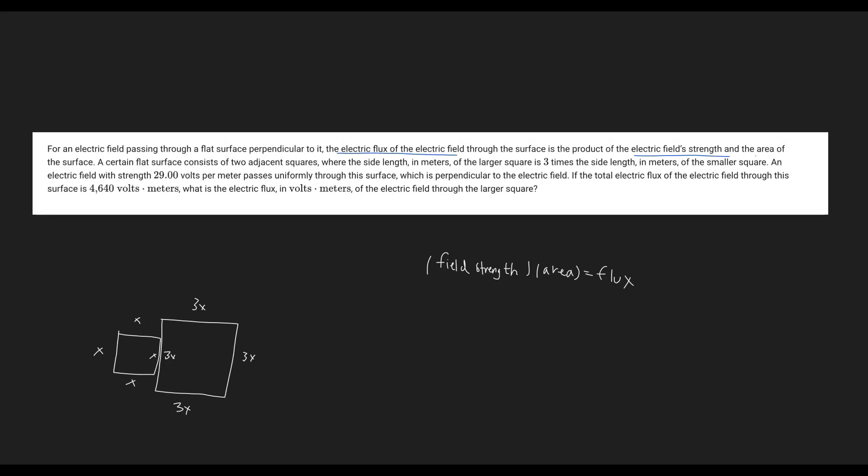A certain flat surface consists of two adjacent squares, which I've drawn down here. In meters, the side length of the larger square is three times the side length in meters of the smaller square. We have represented this by x for the smaller square and then 3x for the side lengths of the larger square.